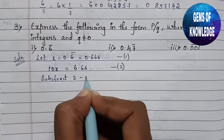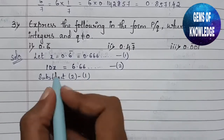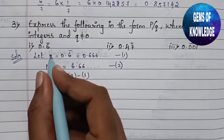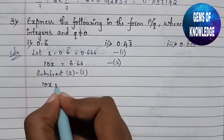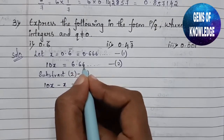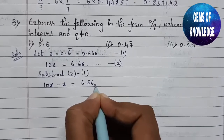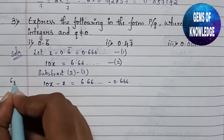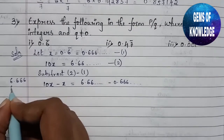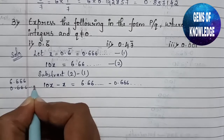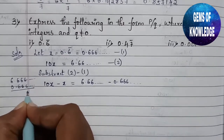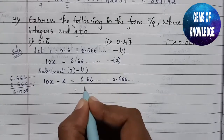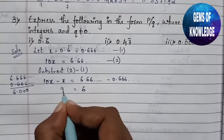We subtract equation 2 minus equation 1: on the left-hand side, 10x minus x. On the right-hand side, 6.666... minus 0.666... — the repeating decimal digits cancel out: 6 minus 6 is 0, 6 minus 6 is 0, and so on — so we are left with 6. On the left side, 10x minus x gives 9x.